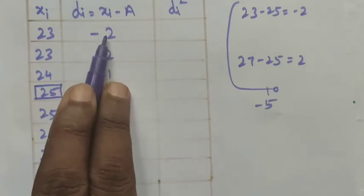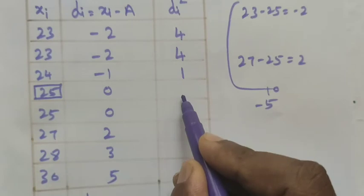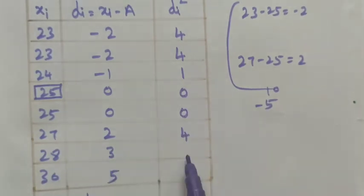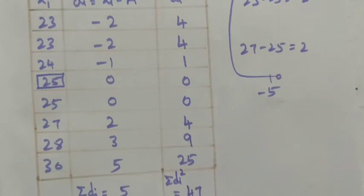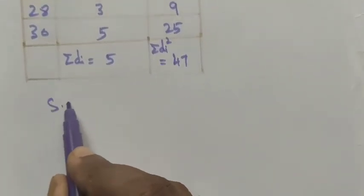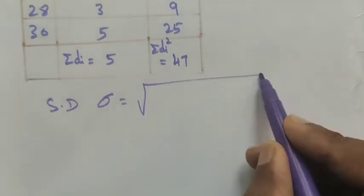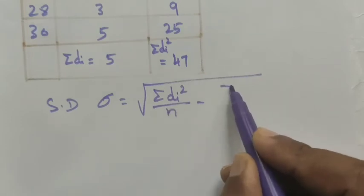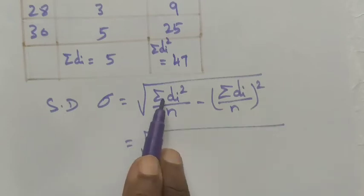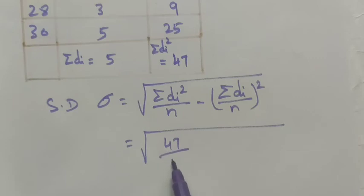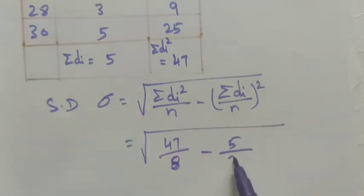Computing di²: (−2)² = 4, (−2)² = 4, (−1)² = 1, 0² = 0, 0² = 0, 2² = 4, 3² = 9, 5² = 25. Therefore summation di² = 4 + 4 + 1 + 0 + 0 + 4 + 9 + 25 = 47. Applying the formula: sigma = square root of (47/8) minus (5/8) whole squared.